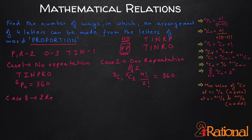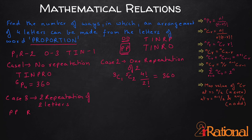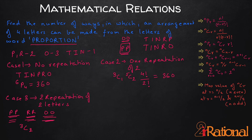Case 3 — two pairs of repeated letters: we select 2 groups from {P,P}, {R,R}, {O,O}, giving 3C2 ways. This already fills all 4 letter slots. We arrange them in 4 factorial divided by 2 factorial divided by another 2 factorial = 6 ways. Total for case 3: 3C2 × 6 = 3 × 6 = 18 ways.